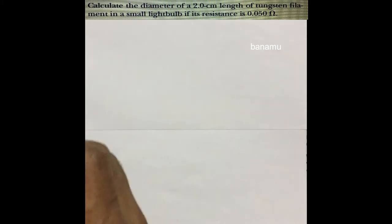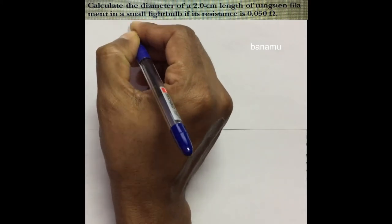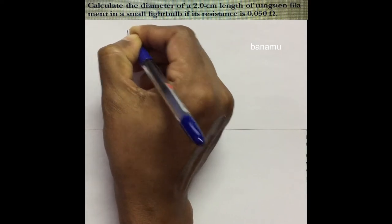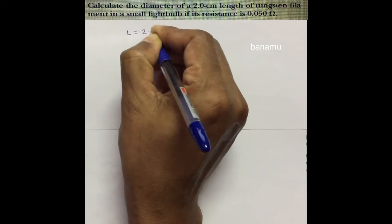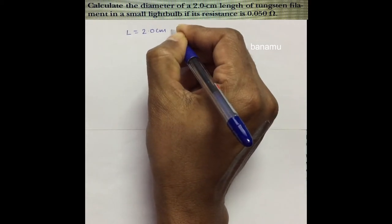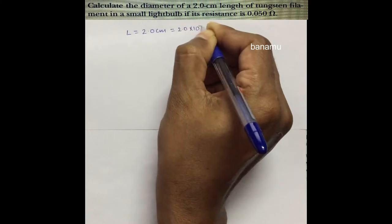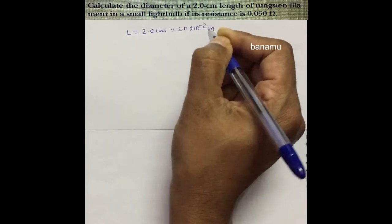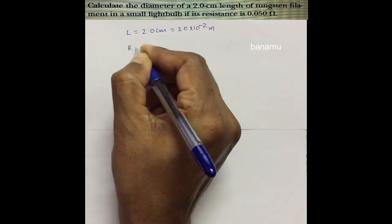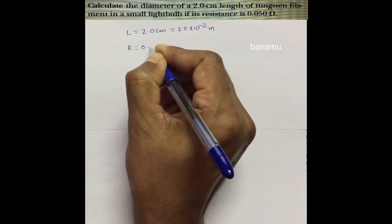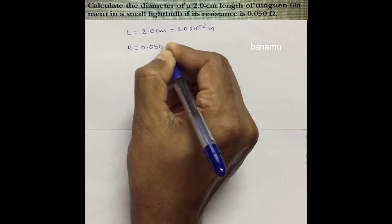Calculate the diameter of a 2 cm length of tungsten filament in a small light bulb if its resistance is 0.05 ohms. From the given values, the length of the tungsten filament is L equal to 2 cm, which is 2 into 10 to the power of minus 2 meters. The resistance of the tungsten filament R is equal to 0.05 ohms.